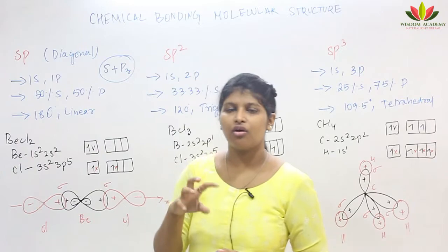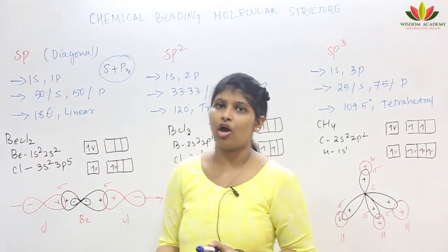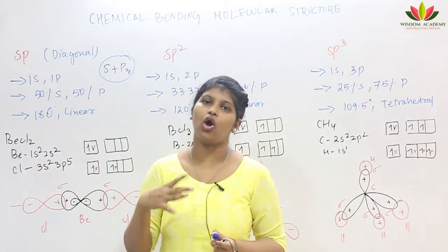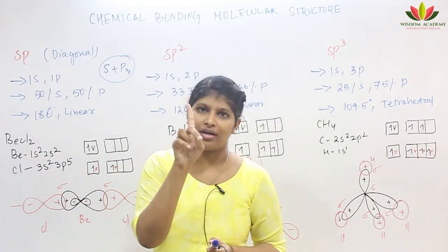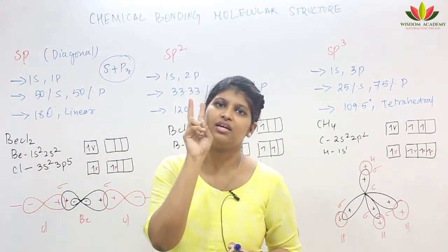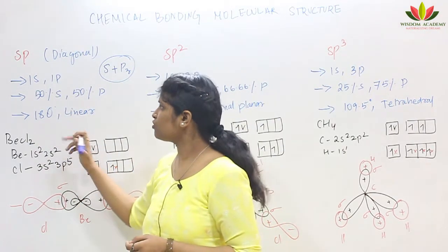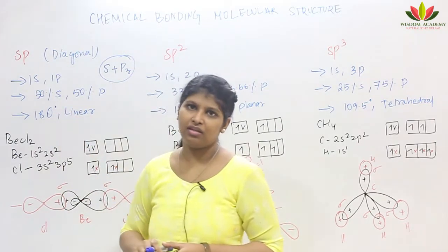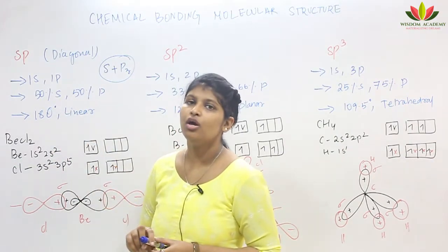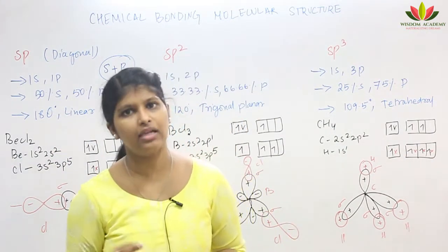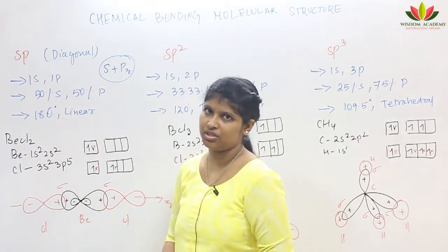For SP hybridization, since we have only two orbitals — one S and one P — the S character is 50% and P character is 50%. The bond angle between them is 180° and the shape is linear. For every hybridization type, there is a particular angle and particular shape. For SP: angle is 180°, shape is linear.